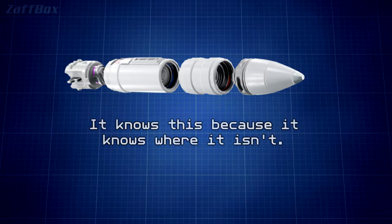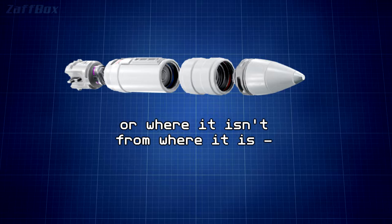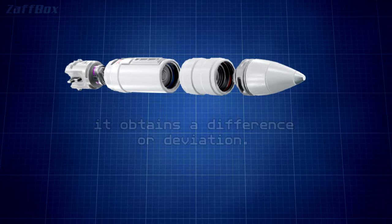The missile knows where it is at all times. It knows this because it knows where it isn't. By subtracting where it is from where it isn't, or where it isn't from where it is, whichever is greater, it obtains